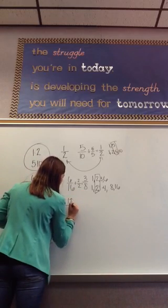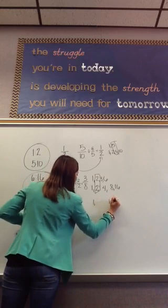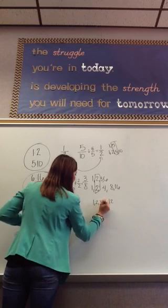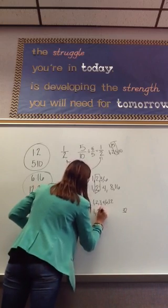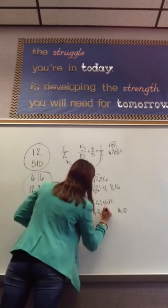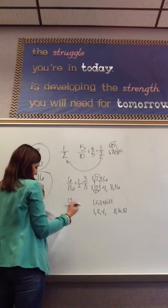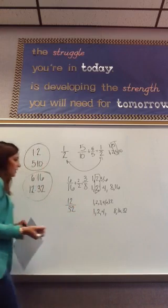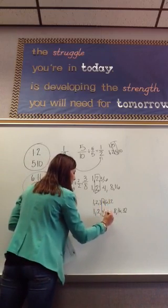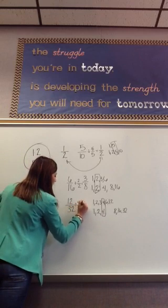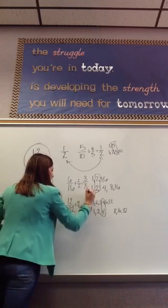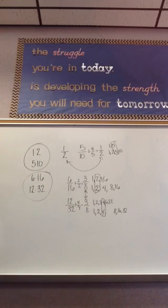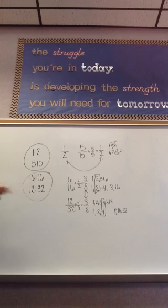We need to do the same with 12/32. Factors of 12: 1, 2, 3, 4, 6, 12. Factors of 32: 1, 2, 4, 8, 16, 32. The greatest common factor is 4. Dividing top and bottom by 4: 12 divided by 4 is 3, and 32 divided by 4 is 8. So 12/32 also equals 3/8. They have equal value and are equivalent ratios. The correct answer is to circle 1 to 2 with 5 to 10, and 6 to 16 with 12 to 32.